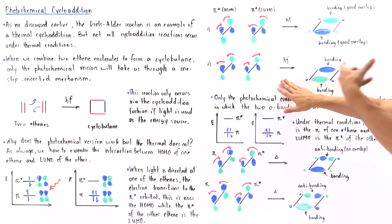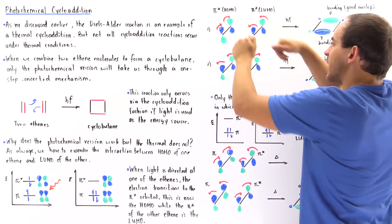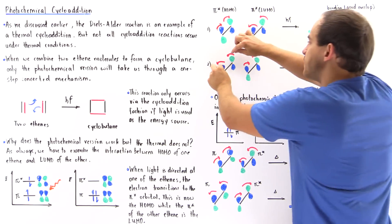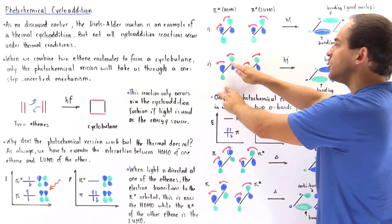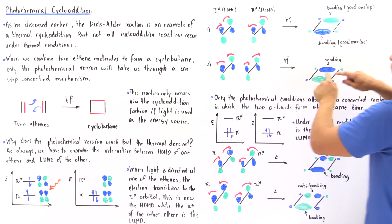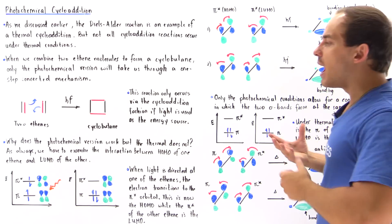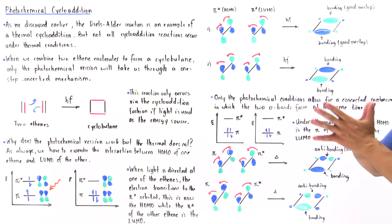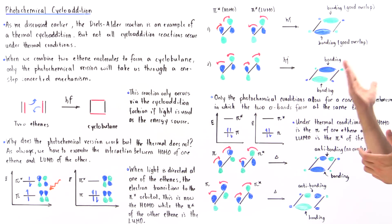Now let's look at if the rotation takes place in the opposite fashion — counterclockwise and clockwise. If these rotate this way and these rotate the other way, there will be a green overlap here and a blue overlap here, both forming bonding interactions. So in both cases, we form a sigma bond in a single step, with both sigma bonds formed in the same exact step. Under photochemical conditions, this reaction takes place via the cycloaddition fashion.